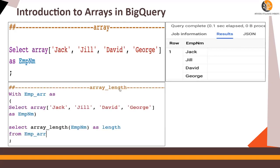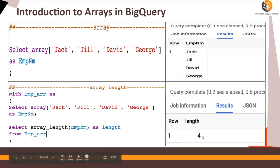ARRAY_LENGTH will tell you the length of an array. Using a WITH statement with employee_array — the same statement as above — you can use the function ARRAY_LENGTH on this array to find out the length. The length is four, meaning the number of items in this array is four.